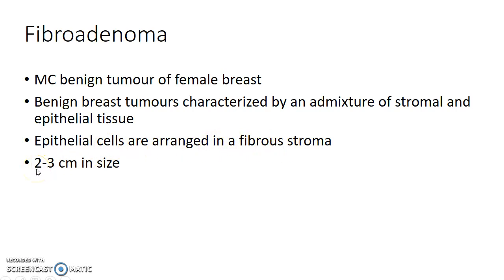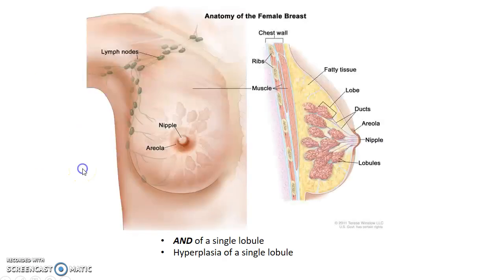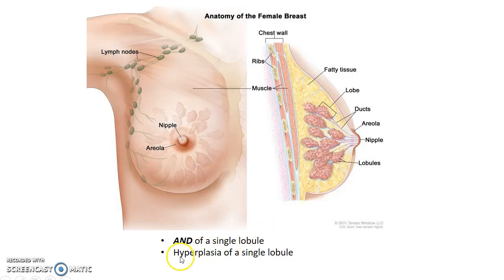Fibroadenomas usually grow to a size of about 2 to 3 centimeters. Fibroadenomas are basically aberrations of normal development of a single lobule. This picture shows the normal anatomy of a female breast — this is a lobe and these are lobules. Basically, fibroadenoma is hyperplasia of a single lobule.